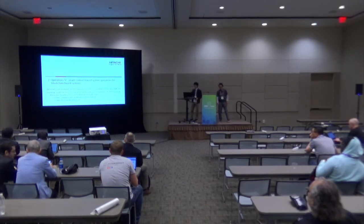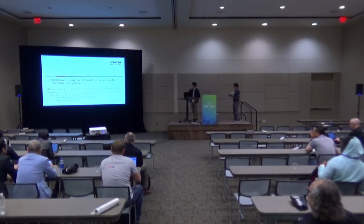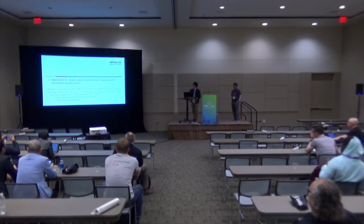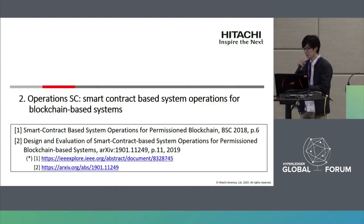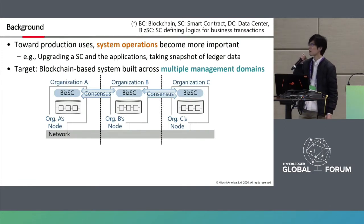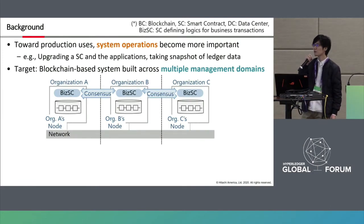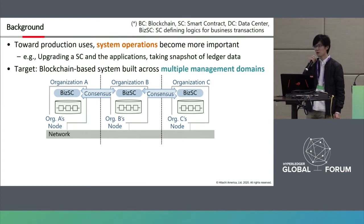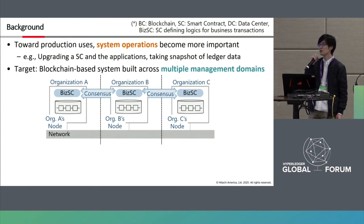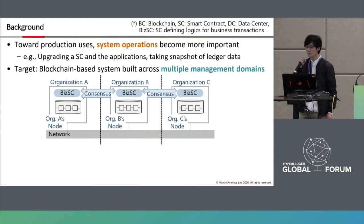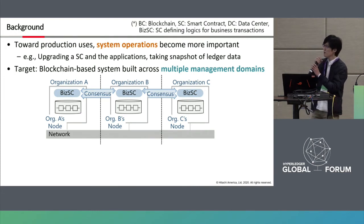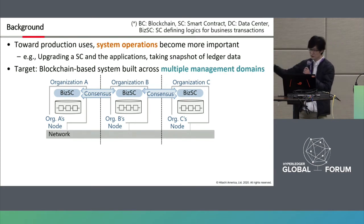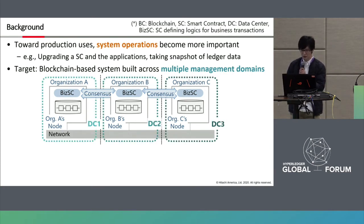From now on, I, Tatsuya Sato, will give a short presentation about smart contract-based system operations for blockchain-based systems. Here is the background. Toward production use of blockchain-based systems, system operations become more important. Examples include upgrading a smart contract and application, or taking a snapshot of ledger data. We assume a single blockchain-based system is built across multiple management domains, such as the data centers of each organization.